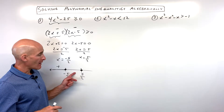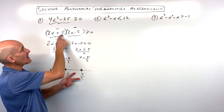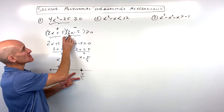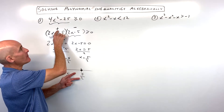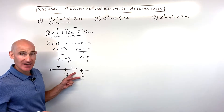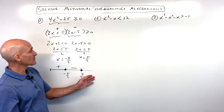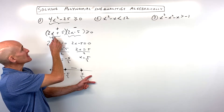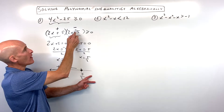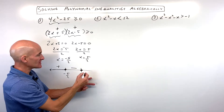Let's pick a point in the middle interval — how about zero? If I put zero in, 2 times 0 is 0 plus 5 is 5, that's positive. 2 times 0 is 0 minus 5, that's negative. A positive times a negative is a negative, so I'll put a minus sign there. If we pick a point over here on the right, say positive 3: 2 times 3 is 6 plus 5 is 11, that's positive. 2 times 3 is 6 minus 5 is 1, also positive. A positive times a positive is a positive.